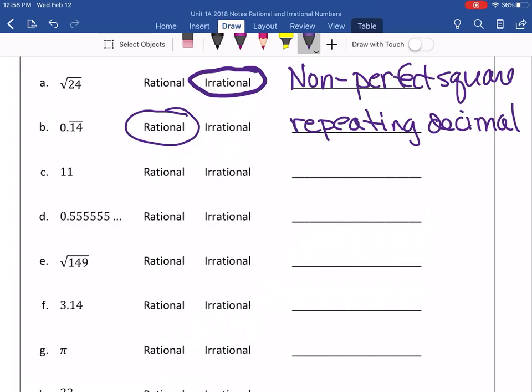Letter C. The whole number 11. Rational. Why? Because all whole numbers can be made into a fraction.